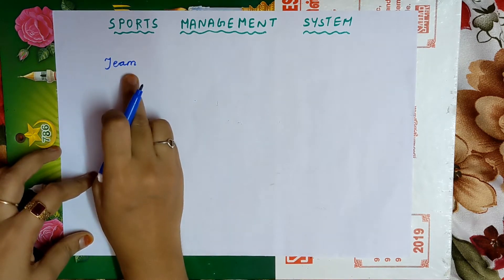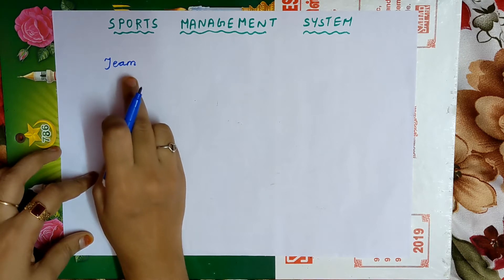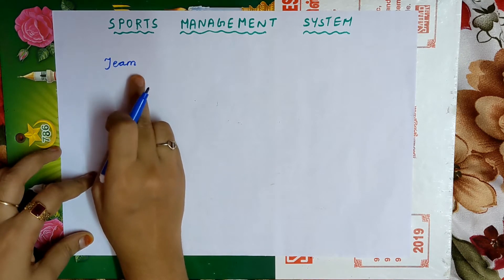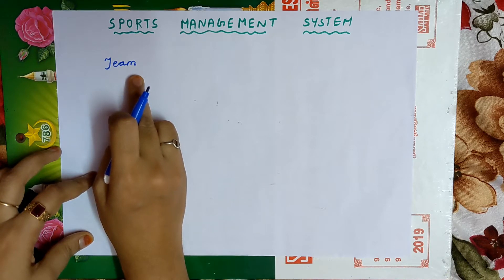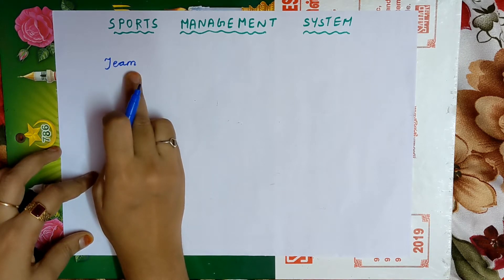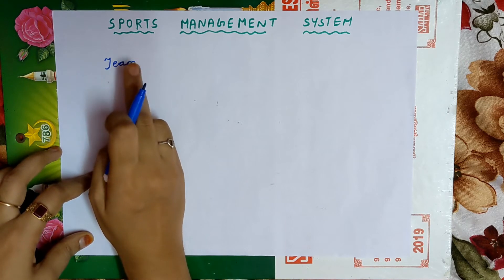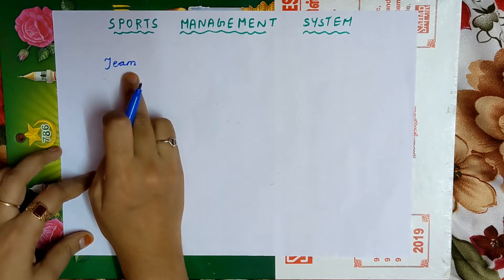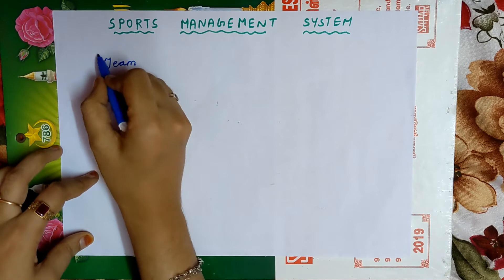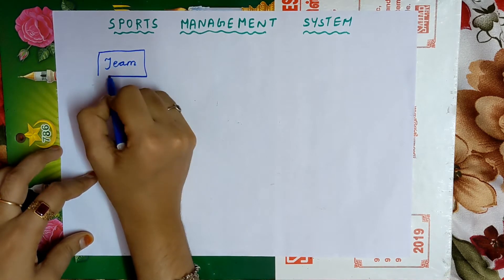Team is obviously a group of players, and players are physically existing. The definition of entity is: it is an object with physical or conceptual existence. Since team is physically existing, it is an entity, and an entity must be written inside a rectangular box.